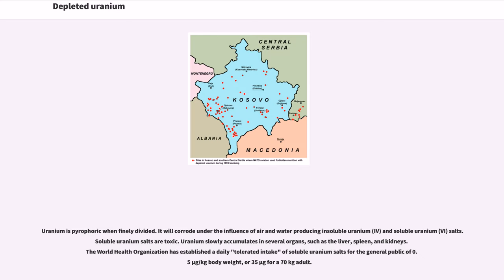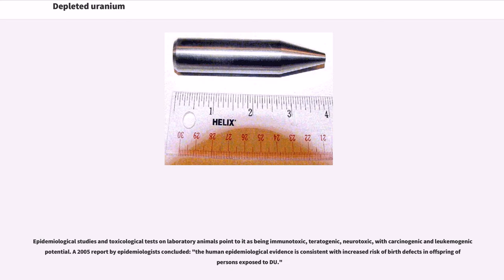Uranium is pyrophoric when finely divided and will corrode under the influence of air and water, producing insoluble uranium(IV) and soluble uranium(VI) salts. Soluble uranium salts are toxic. Uranium slowly accumulates in several organs such as the liver, spleen, and kidneys. The World Health Organization has established a daily tolerated intake of soluble uranium salts for the general public of 0.5 micrograms per kg body weight, or 35 micrograms for a 70 kg adult. Epidemiological studies and toxicological tests on laboratory animals point to it as being immunotoxic, teratogenic, and neurotoxic, with carcinogenic and leukemogenic potential. A 2005 report by epidemiologists concluded that the human epidemiological evidence is consistent with increased risk of birth defects in offspring of persons exposed to DU.